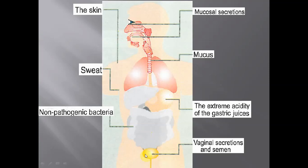Infection can also occur through unprotected sexual relations, which can transmit sexually transmitted diseases. Also from a mother to her fetus, which can also transmit diseases. And through contaminated needles — for example, in drug addicts who share needles — which might be contaminated with microorganisms.